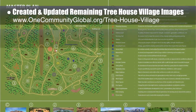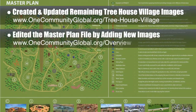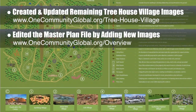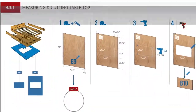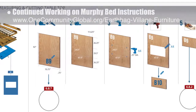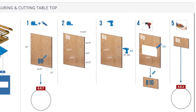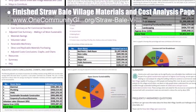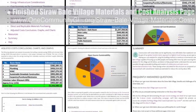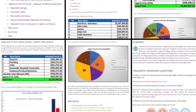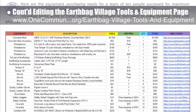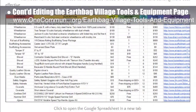The core team edited the master plan file by adding new images and then updated it across the site. You can see that update on our overview page. In addition, we continued working on the Murphy Bed instructions, continuing to test different layouts — here is one of the new instructional page examples in progress. The core team also finished the complete straw bale village materials and cost analysis page. You can see pictures of this work here and access the complete page on the site. The core team also continued editing the earthbag village tools and equipment page, updating the Google spreadsheet and adding new screenshots.